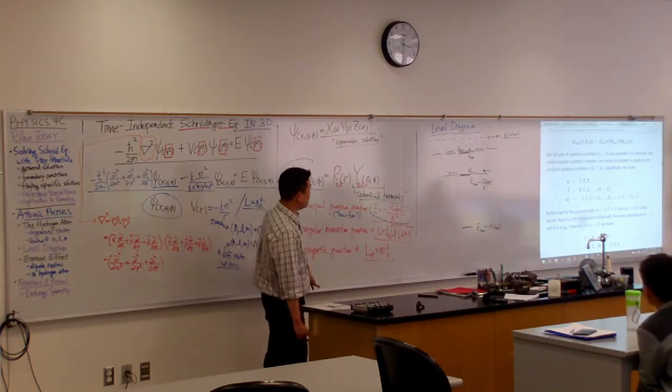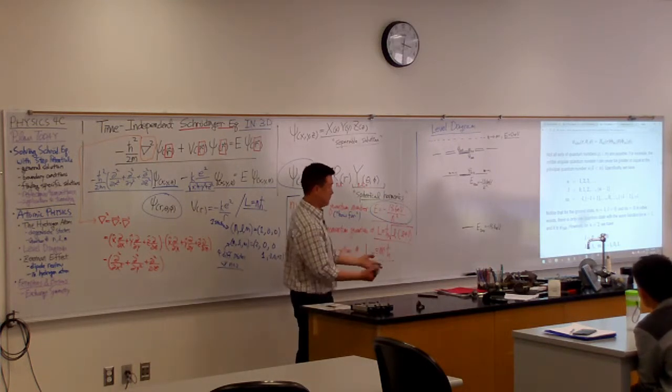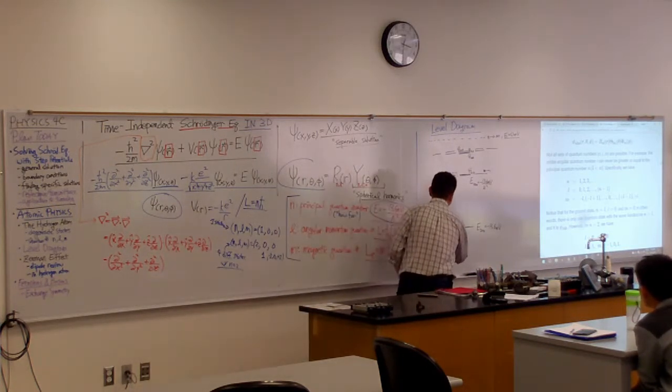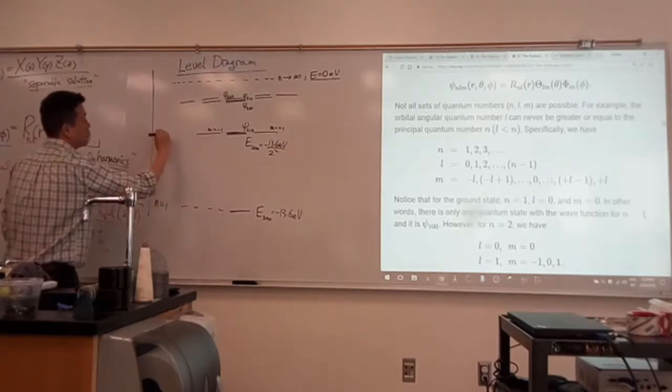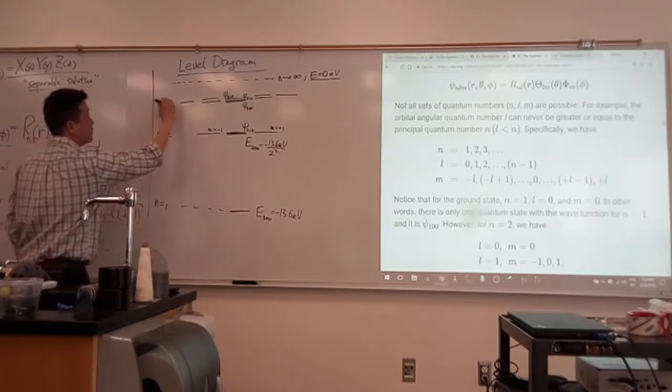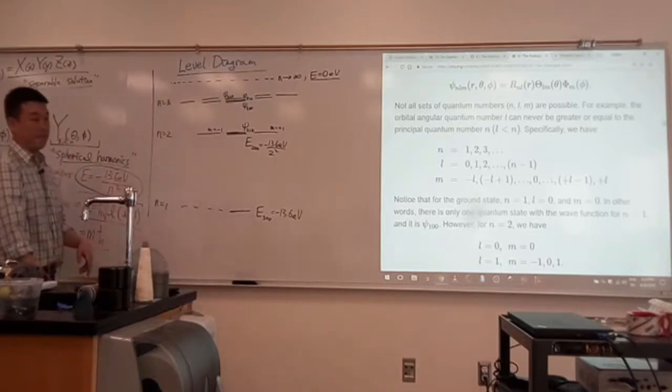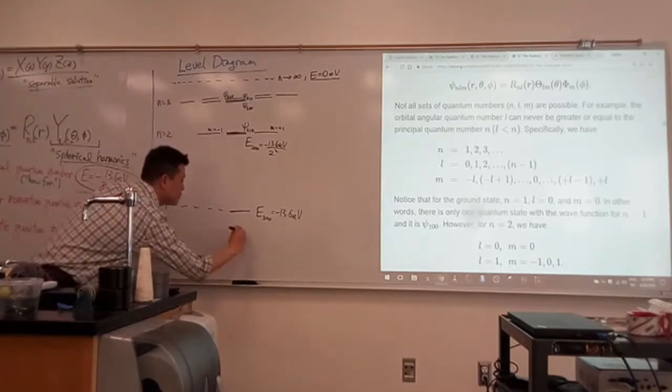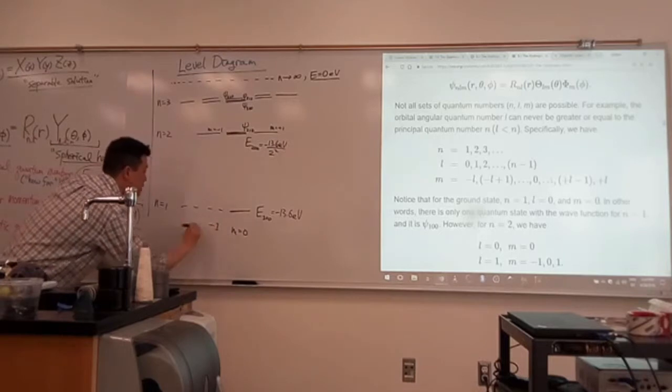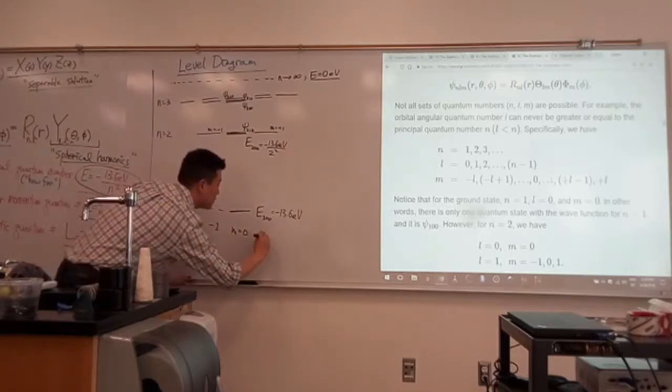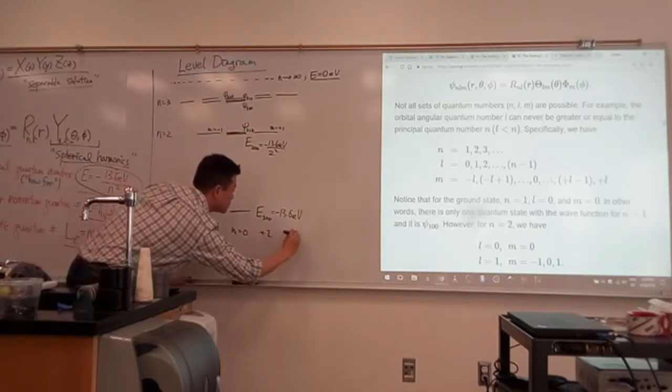I've chosen to pick n and m. So, this axis represents n, n equals 1, n equals 2, n equals 3. And this axis here represents m. m equals 0, minus 1, minus 2, plus 1, plus 2.